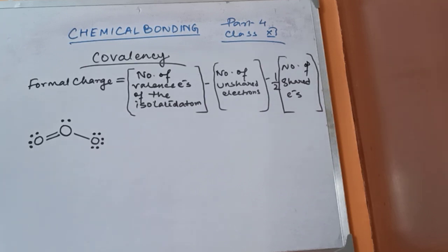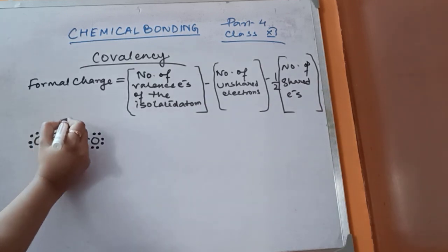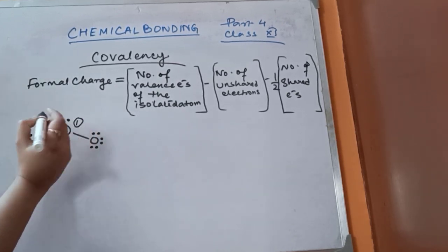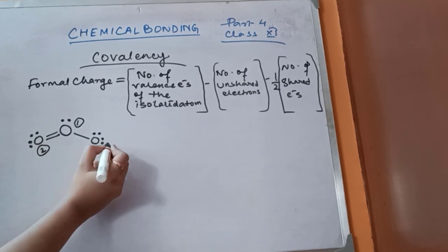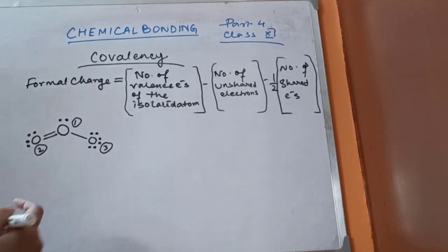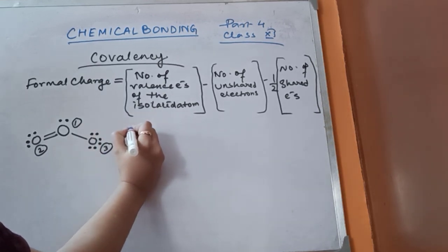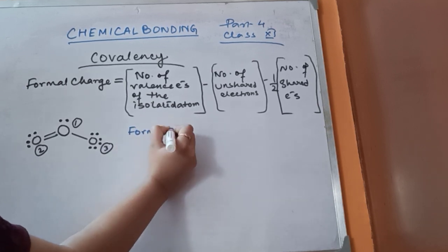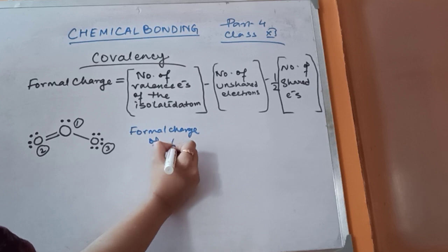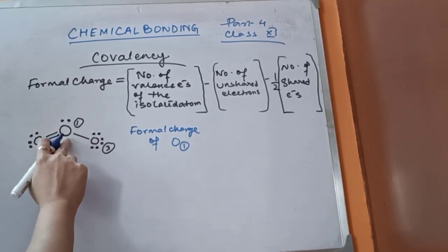This is the Lewis structure of ozone. Since all are oxygen atoms, I'll name them as O1 (the middle one), O2, and O3. So the formal charge on each of these oxygens — let me start with the formal charge of the first oxygen, O1, which is the middle one.